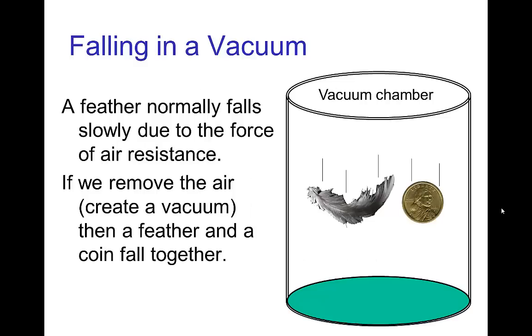We normally think of a feather falling slowly, and we understand that it's not so much because of its weight, but because there is a significant force of air resistance on a feather. But if we do the classic experiment of placing a feather and a coin in a vacuum chamber and dropping them together, you would see that the feather and the coin fall at the same speed. There's lots of videos online that show that.